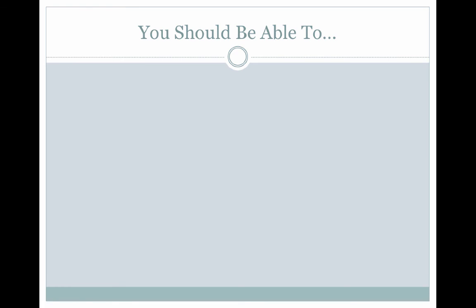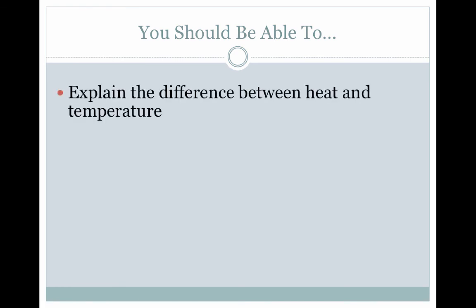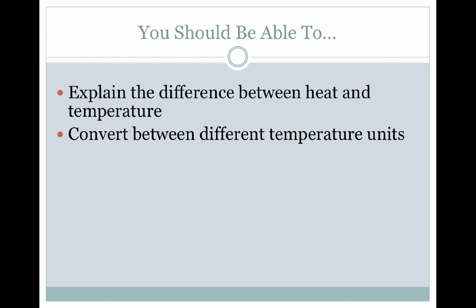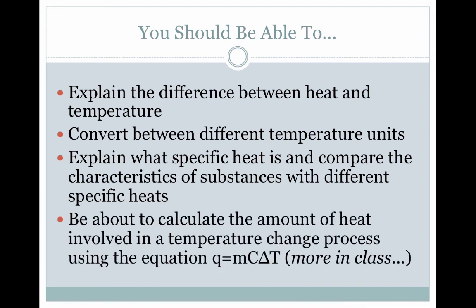So that's pretty much it for our video here. At this stage in the game, you should be able to do a couple of things. For example, you should be able to explain what the difference is between heat and temperature, total versus average kinetic energy. You should be able to convert between the different temperature units, especially if you have the equations there in front of you. You should be able to describe and explain what specific heat is and be able to compare the characteristics of substances with different specific heats. And then last but not least, and we'll practice this more later on, you should be able to use the equation Q equals MC delta T as a tool to connect the value of heat together to the value of temperature. And as always, we'll talk more about this in class and provide some examples.